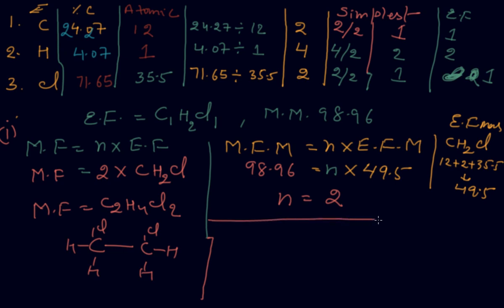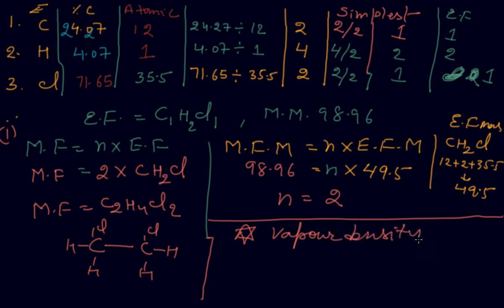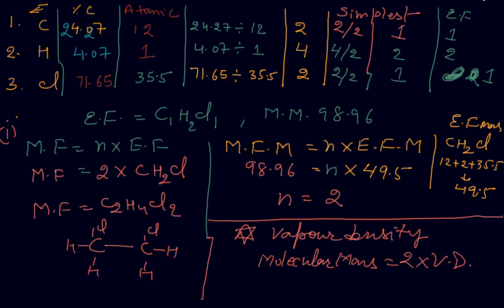This is one of the simplest ways to find the molecular formula. Be careful: whenever vapor density is given, molecular mass = 2 × vapor density. Thank you — this covers empirical and molecular formula. In the next class we will discuss its laws and more uses. Thank you.